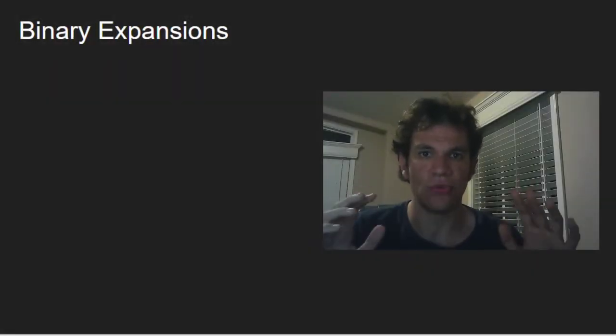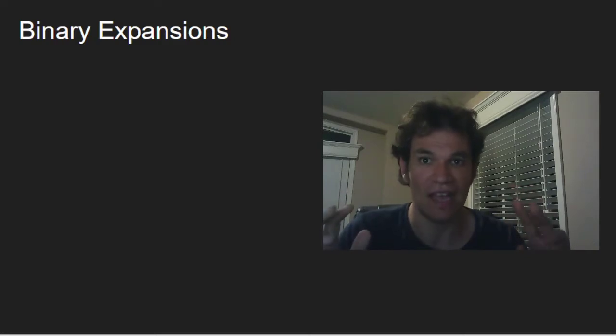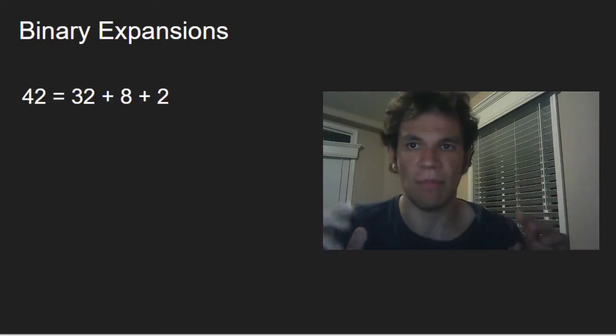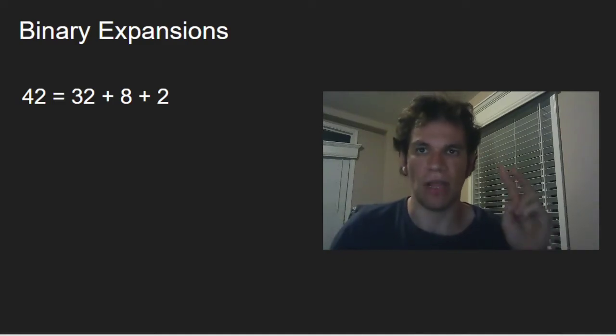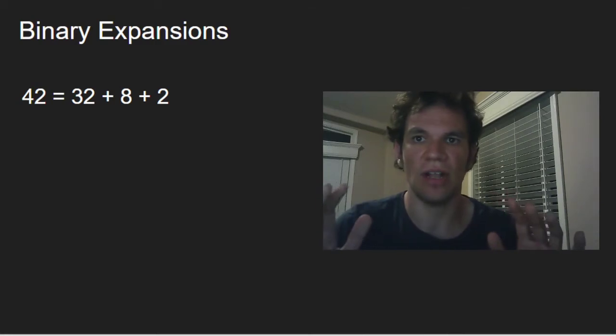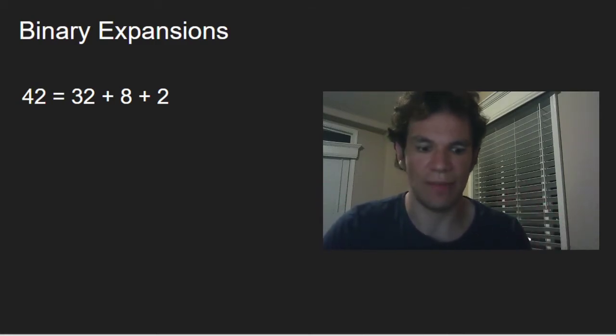We know that every natural number can be expressed as a sum of different powers of 2. For example, 42 equals 32 plus 8 plus 2. This is called the binary expansion.